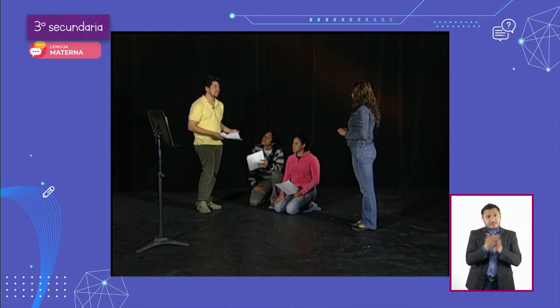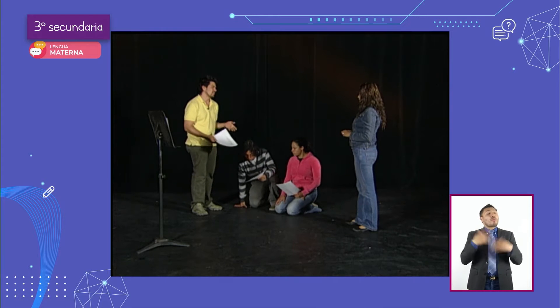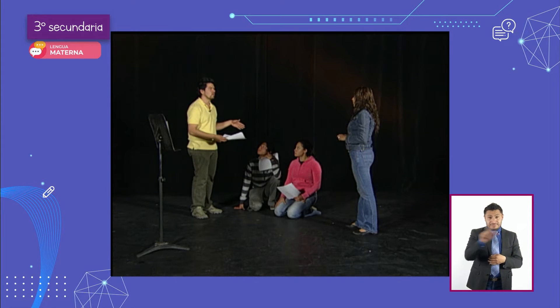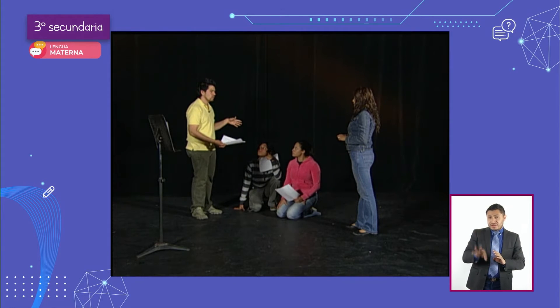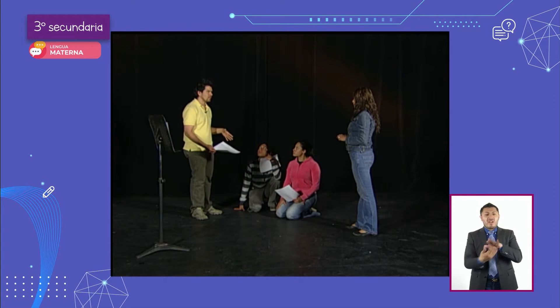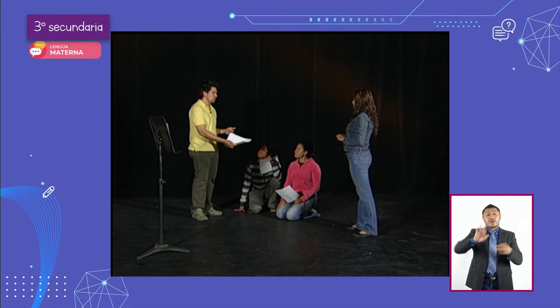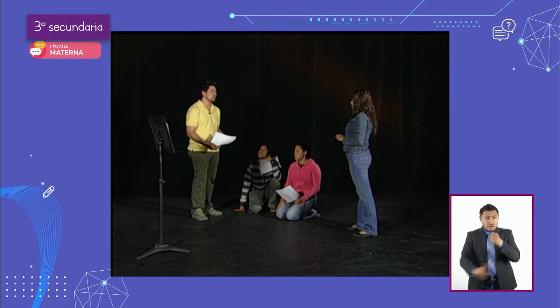Primero eliges una obra. Ya que decides por qué quieres esa obra, qué quieres decir con ella y de qué quieres hablar, posteriormente eliges un elenco. Ya que eliges el elenco, sigue lo que llamamos el trabajo de mesa: un tiempo en el que nos sentamos a discutir solamente de lo que dice cada personaje, de por qué, cuál es la relación entre ellos y cuáles son los conflictos que se van a tener que desarrollar a lo largo de la obra. Se consideran características particulares como el entorno social, político y económico, y si lo dejaremos en ese entorno o lo traeremos a la época actual. Una vez tomadas esas decisiones, podemos pasar a la etapa de las primeras lecturas.